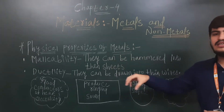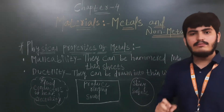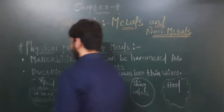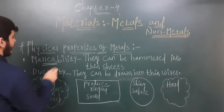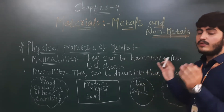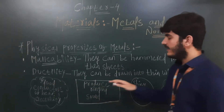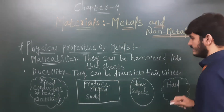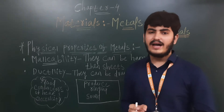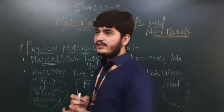Malleability means that when you heat a particular metal and then hammer it, it converts into a thin sheet. This is the first physical property: malleability. Metals can also be drawn into thin wires. Where do you find the use of aluminium and copper wires?